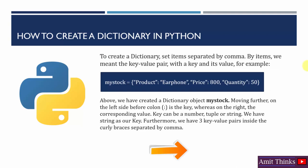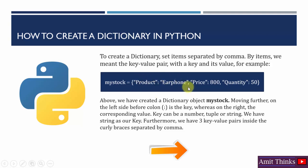Let us see how we can create a dictionary in Python. Dictionaries in Python are separated by comma. Here in 'my_stock', we have created a dictionary object. Within that we have key-value pairs — product, price, and quantity are keys, and earphone and 850 are values. Key and value are separated by a colon, and each key-value pair is separated by a comma. This is a three key-value pair dictionary.